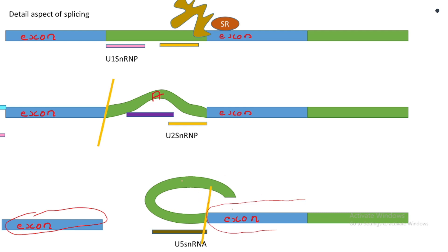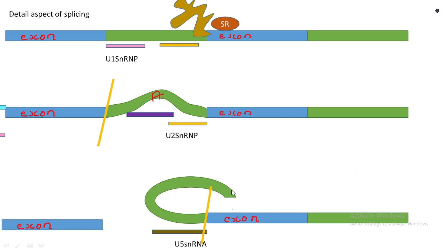After that, the intron is totally spliced out from the pre-mRNA. In the same method, other introns are also simultaneously spliced out. As a result, the mature mRNA is formed — organized with only exons. After splicing out the intron completely, all the snRNPs are released from the splicing site, and they again get associated with their corresponding proteins to organize another spliceosome at another splicing site.